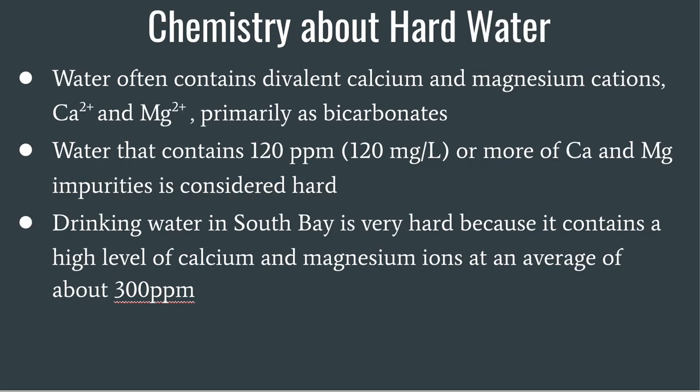Water often contains different calcium and magnesium cations, primarily as bicarbonates. Water that contains 120 ppm or more of calcium and magnesium impurities is considered hard. Drinking water in the South Bay is very hard because it contains a high level of calcium and magnesium ions at an average of about 300 ppm.